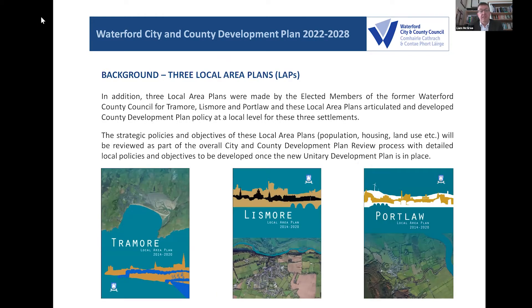The Local Area Plans give the level of detail people typically look for at their local level — open space provision, rights of way, widening footpaths, pedestrianizing streets. We have those for Tramore and Lismore at the moment, and those continue in force until replaced. We'll be looking to replace those starting next year once the county plan is in place. It's a rolling process — we'll immediately move on to Local Area Plans once the county plan is adopted.